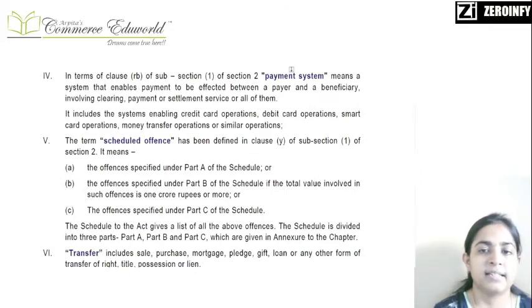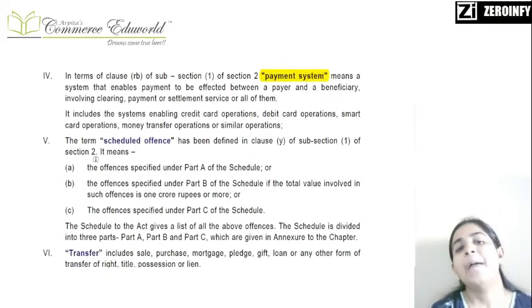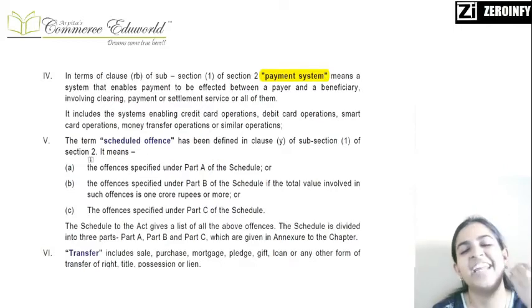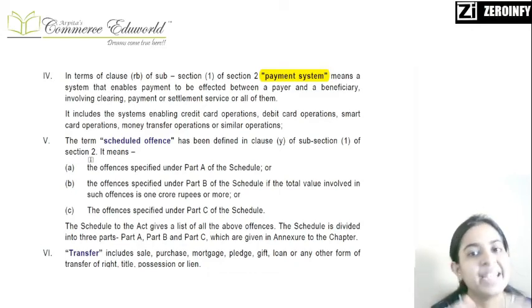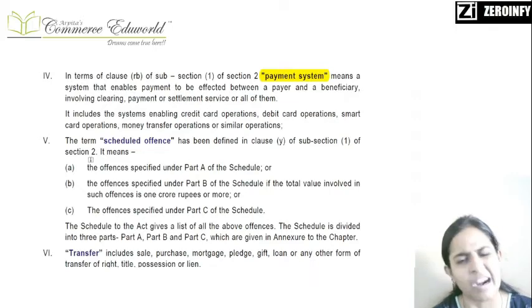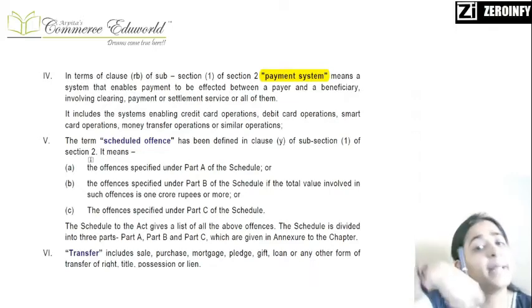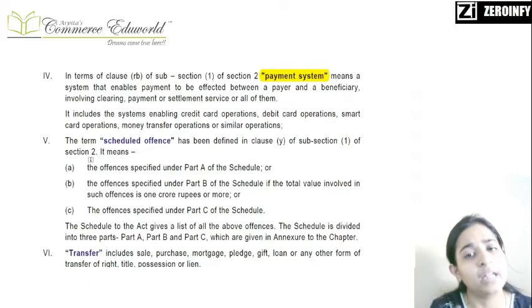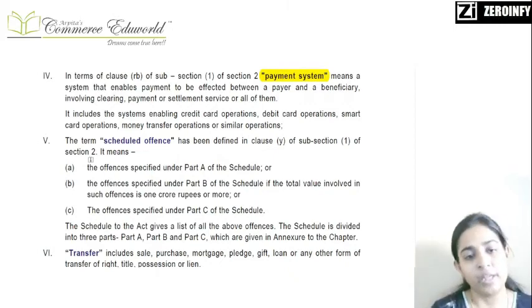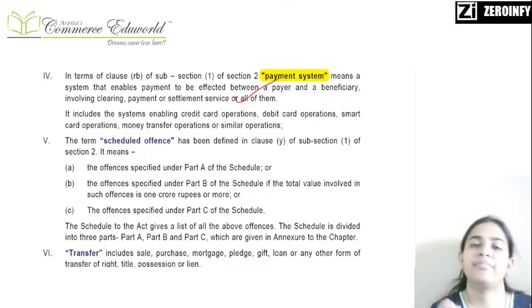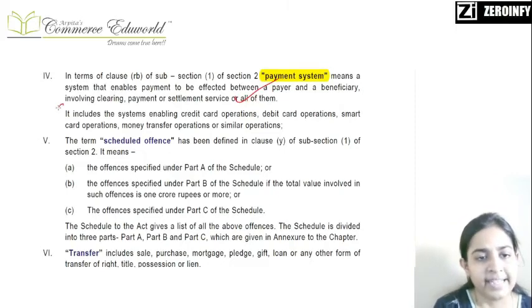The next very important definition is payment system. Payment system is simply a way in which one person pays another. For example, if you are paying for lectures, you will pay by net banking, NEFT, RTGS, IMPS, debit card, or credit card. The intermediary - the banks etc. - who are in between helping to affect the payment, that is nothing but your payment system. Examples include debit card and credit card operations.